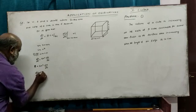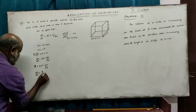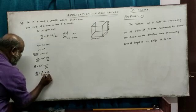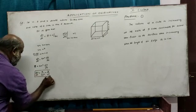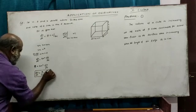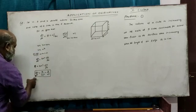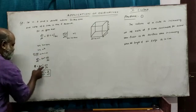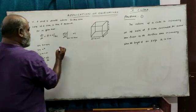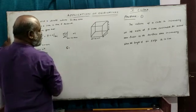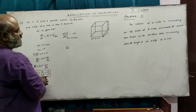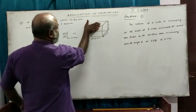Therefore, dx/dt equals 9 divided by 3x squared, which simplifies to 3 divided by x squared.